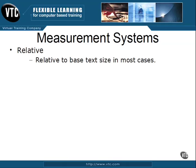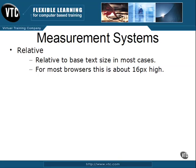For most browsers, this is about 16 pixels high. Now by using these relative systems, the end user will have a better experience because they will be able to adjust things like the size of the text on their screen to meet their specific needs, and the design and other elements will shift to accommodate those changes.